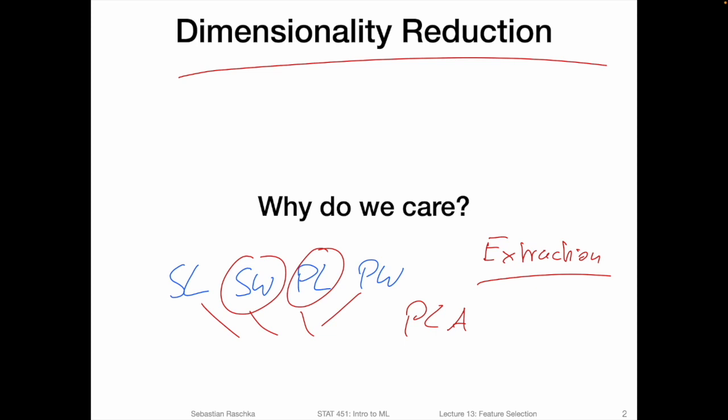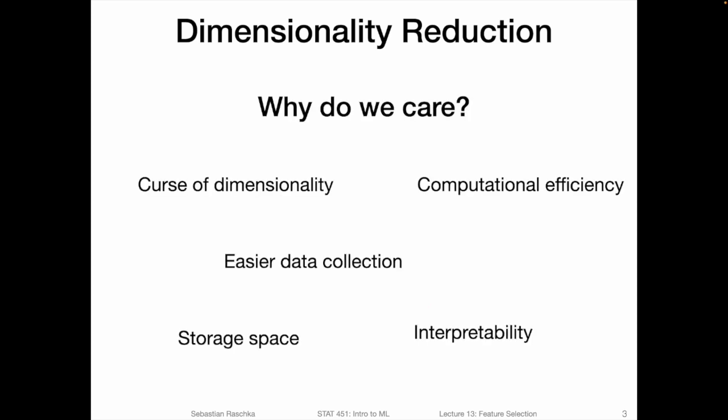So why do we care about smaller dimensional feature spaces? Here is a little brainstorming of different reasons why dimensionality reduction is interesting and useful. One is the curse of dimensionality — we briefly talked about this back in the k-nearest neighbor lecture. Roughly speaking, it refers to the fact that machine learning classifiers sometimes become worse and worse the more features we have. In particular, they suffer from a larger degree of overfitting the more features we have. Reducing the size of the feature set can actually improve the performance of certain algorithms, particularly k-nearest neighbors or decision tree algorithms, which are very prone to overfitting.